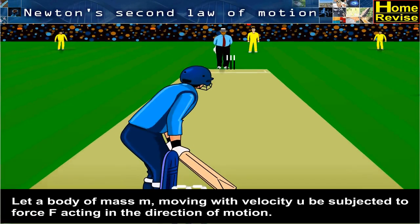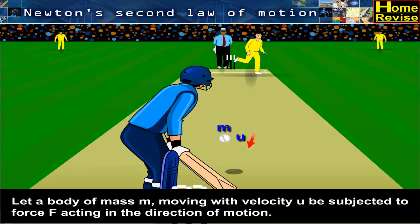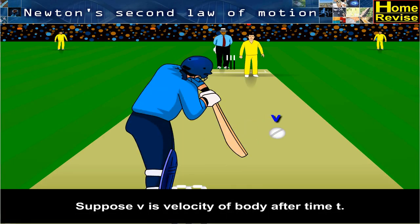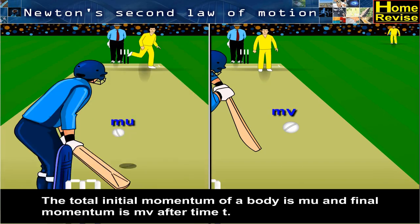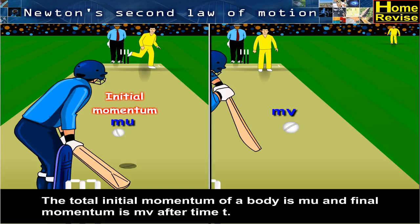Let a body of mass M, moving with velocity U, be subjected to force F, acting in the direction of motion. Suppose V is the velocity of the body after time T. The total initial momentum of the body is MU and final momentum is MV after time T.